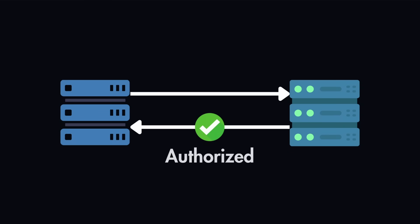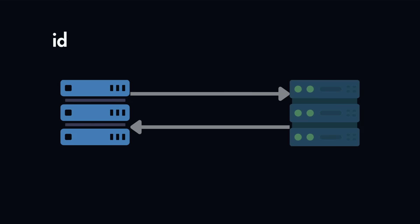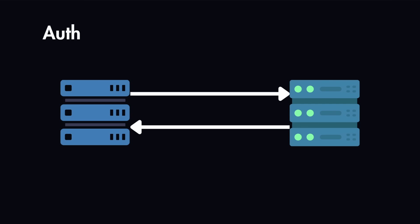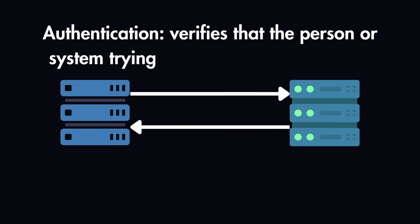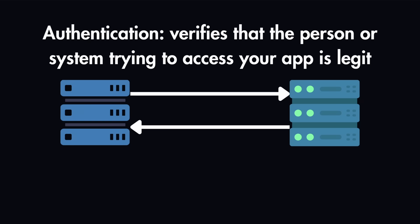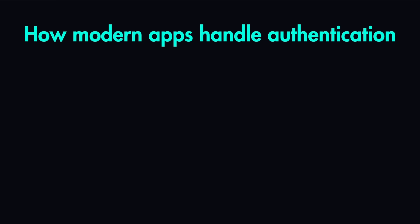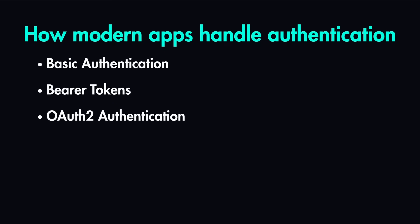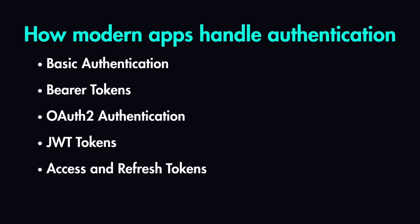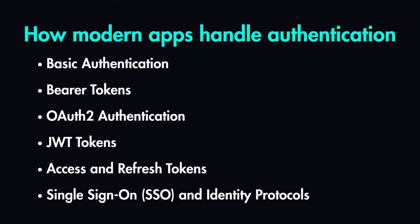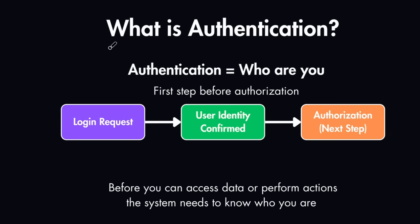Before a system can authorize or restrict anything, it first needs to know the identity of the requester. That's what authentication does — it verifies that the person or system trying to access your app is legitimate. In this video, you'll learn how modern applications handle authentication, from basic to bearer tokens, to OAuth2 and JWT tokens, as well as access and refresh tokens, and single sign-on and identity protocols. But first, let's understand what authentication is.